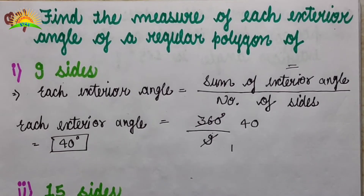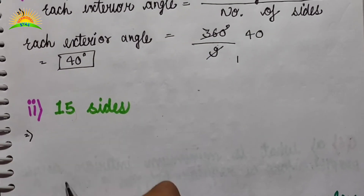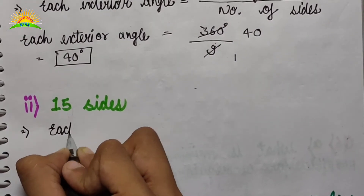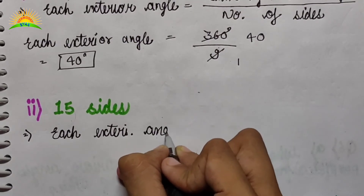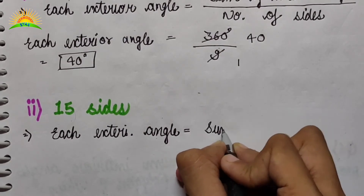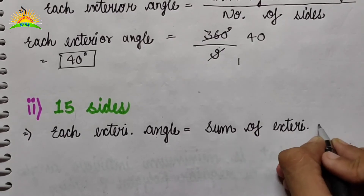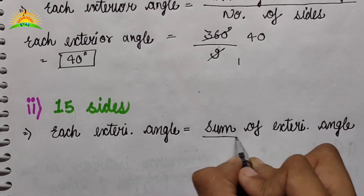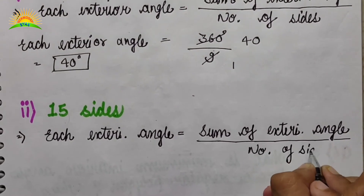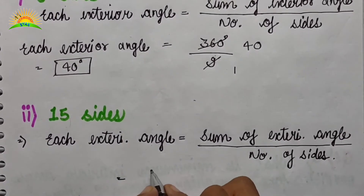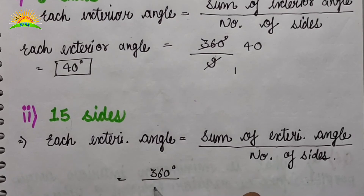This was the first part of question 2. Now coming to the second part with 15 sides. Similarly, each exterior angle equals sum of exterior angles divided by number of sides, which is 360 degrees divided by 15.